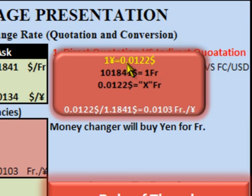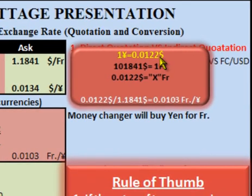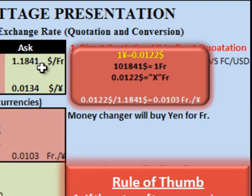Now we have given him 1 Yen and we have taken from him $0.0122. But we need francs. So we'll take these dollars to the seller of franc and we'll ask him to convert these dollars into franc. So we'll take $0.0122 and go to the seller of franc. The seller of franc will give us the ask price, and he will tell us that he sells 1 franc for $1.1841. So this is the exchange rate — 1 franc equals $1.1841.